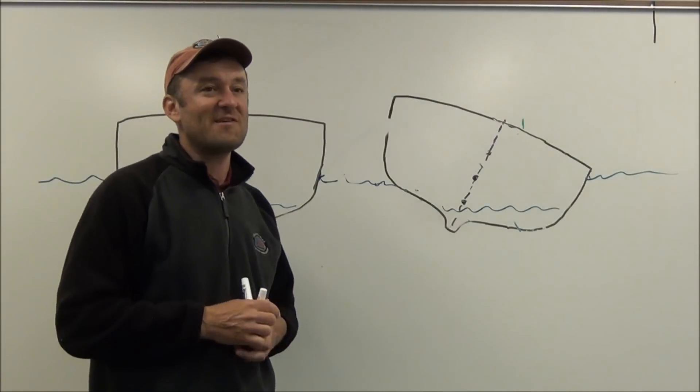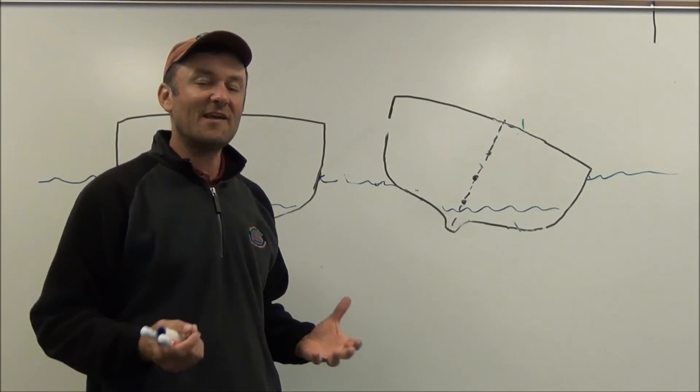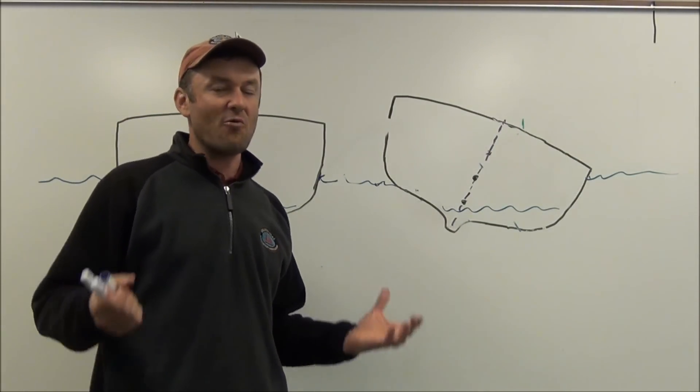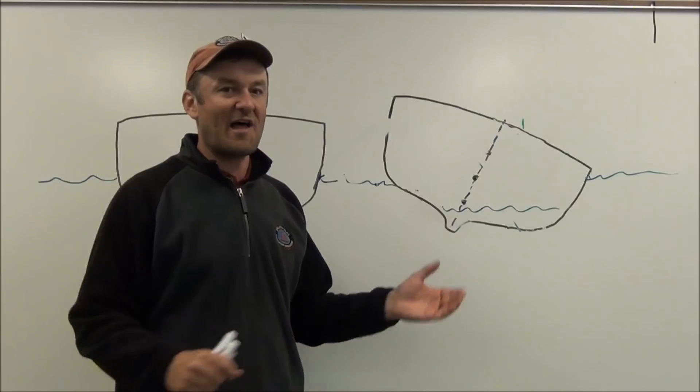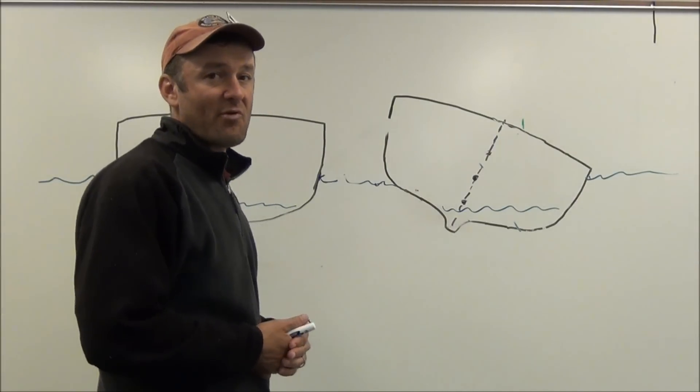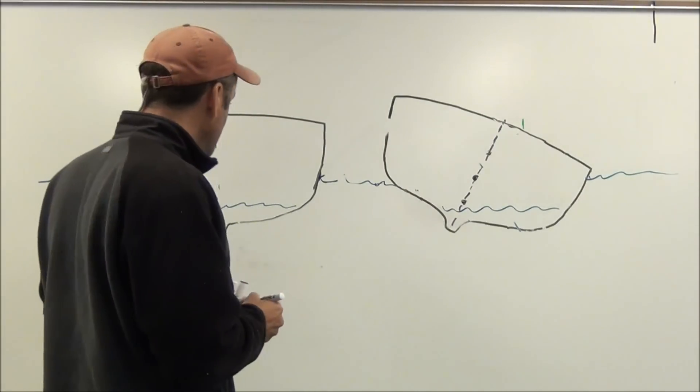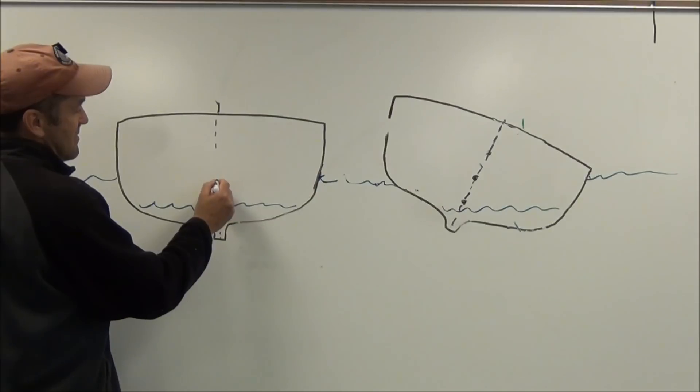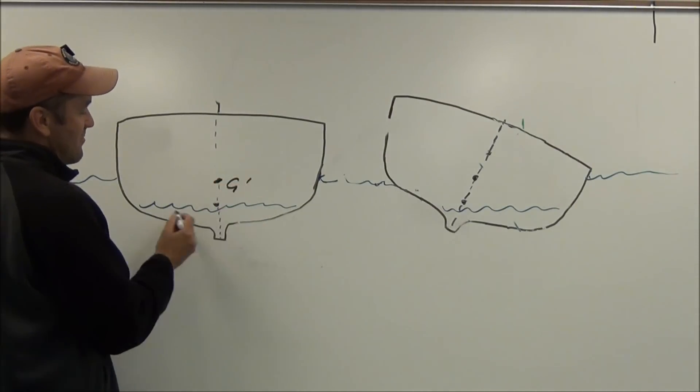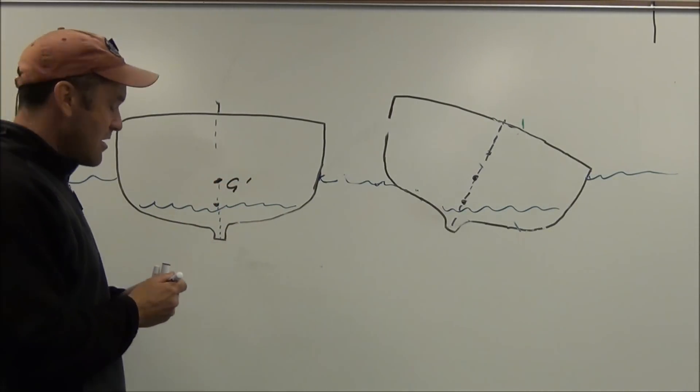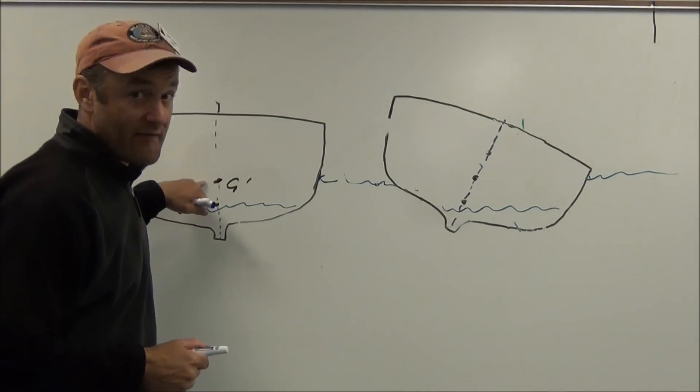Now the problem with free surface is it's a liquid, it doesn't sit still. So as the boat rocks, that liquid sloshes around and that can in turn jeopardize the stability of the vessel. So here we have our center of gravity here, we have this water in there, so the water adds to the center of gravity of the vessel.